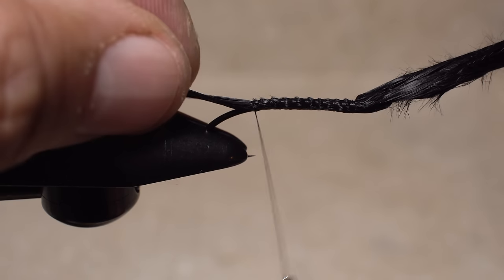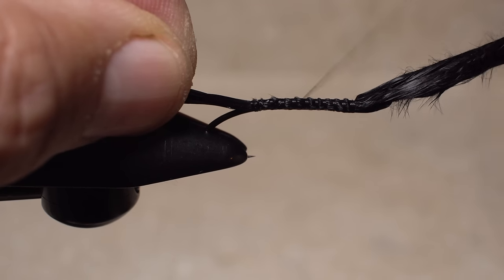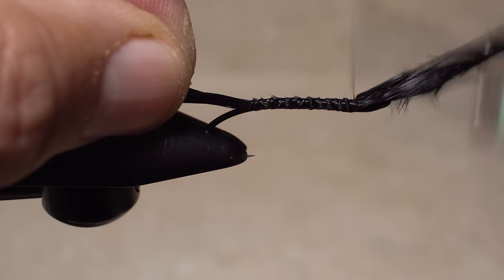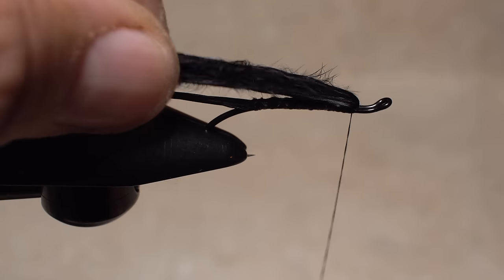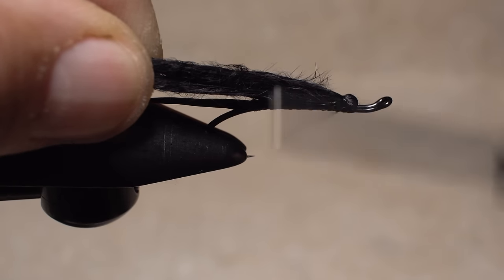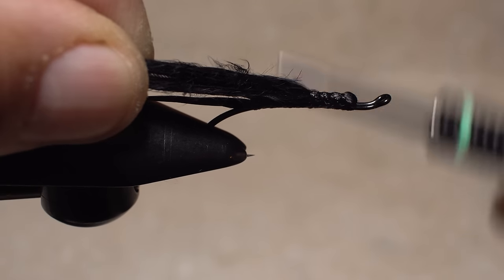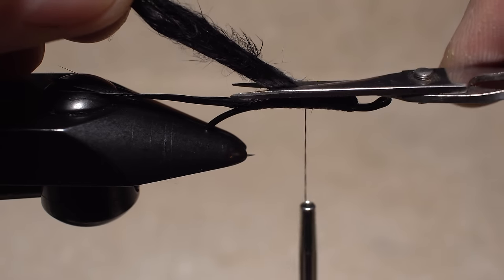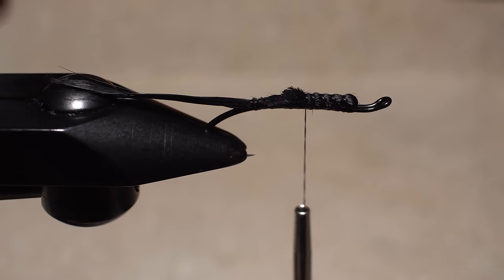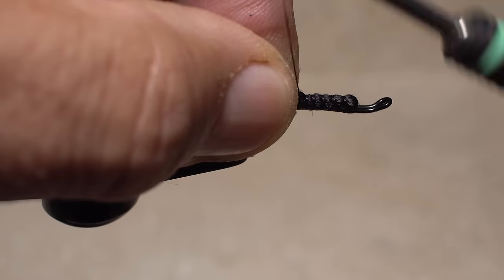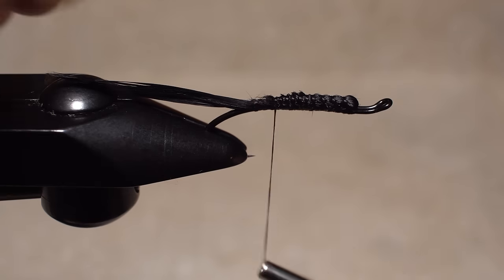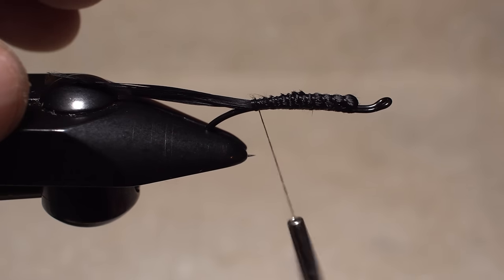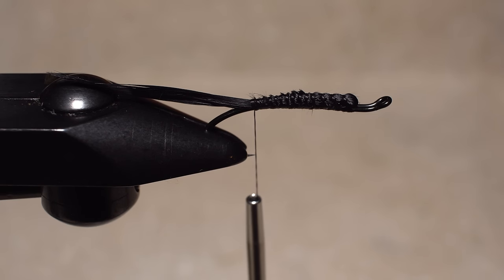You can then make open spiral wraps forward to relocate your thread to the initial tie-in point. Once there, fold the butt end of the marabou plume back and start taking wraps to bind it to the top of the hook shank. At about the midpoint of the shank, snip the marabou off at a shallow angle and continue taking thread wraps again back to the start of the bend. The idea here is to build up a slightly bulky underbody on the fly. If it looks something like this, mission accomplished.